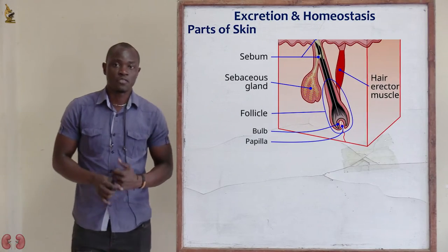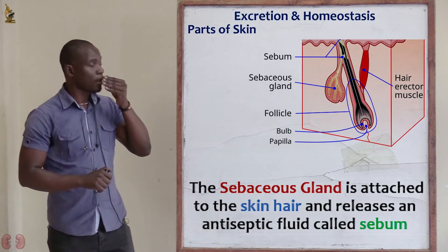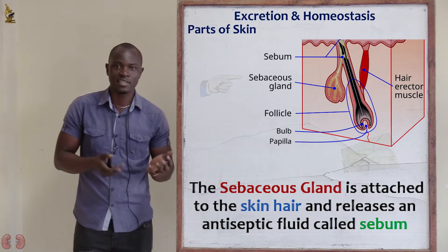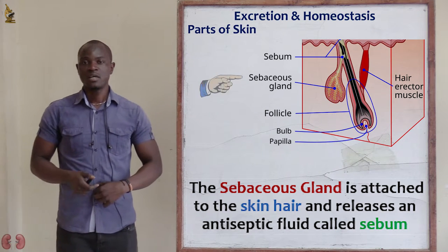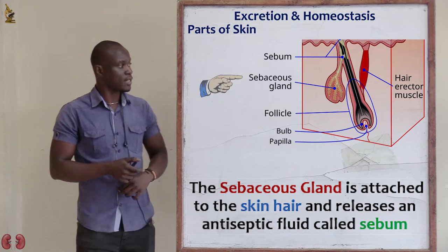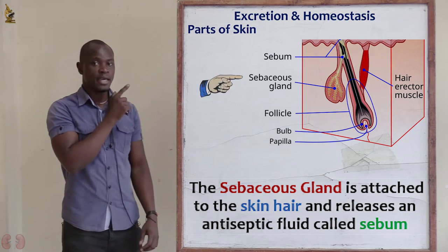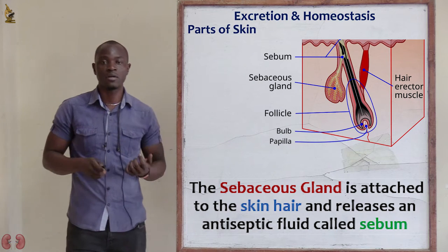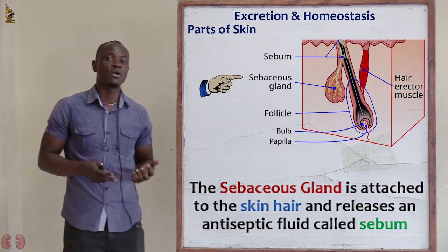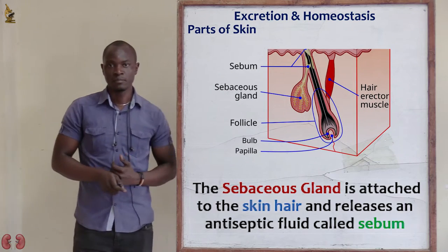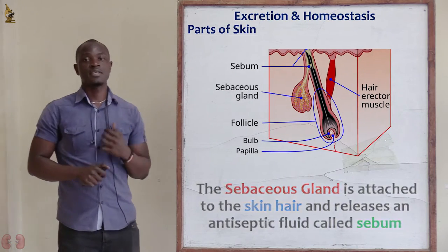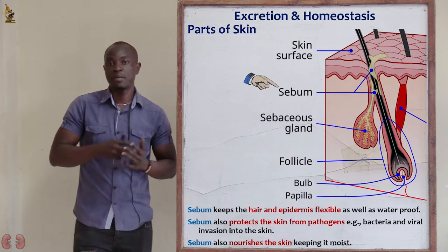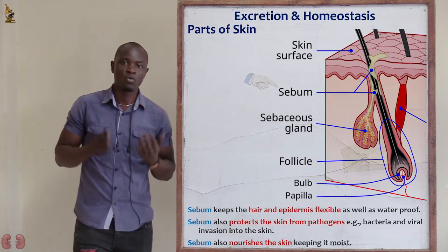Let's now look at the next part of the dermis. We have the sebaceous gland, as some people call it. The sebaceous glands are attached to the hair follicle, keeping it moist as it passes through the skin. One function of the sebaceous gland is that they secrete sebum, which mainly keeps the hair of the epidermis flexible and waterproof.